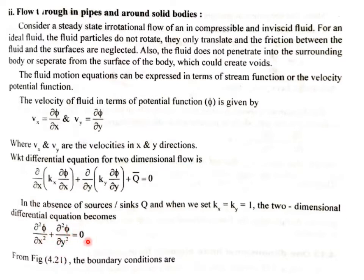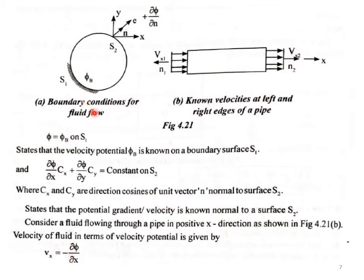From the figure, the boundary conditions are: φ = φ_b on S1, meaning the velocity potential φ_b is known on the boundary surface S1. And ∂φ/∂x · Cx + ∂φ/∂y · Cy = constant on S2, where Cx and Cy are the direction cosines of the unit vector n normal to surface S2. This states that the potential gradient or velocity is known normal to surface S2.